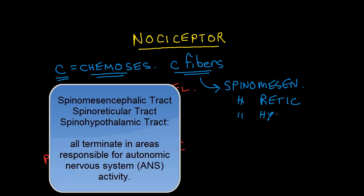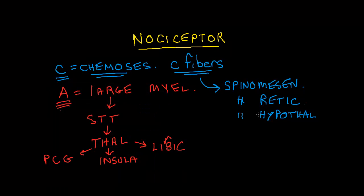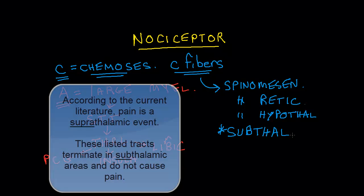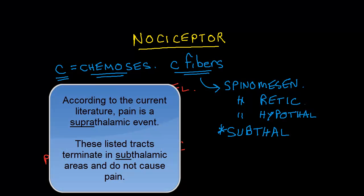The important thing to note here is that these C fibers synapse in areas that are two things that are important. One, they are subthalamic, meaning they're below the level of the brain that fires and registers pain. So any of this activity that goes subthalamically is going to create, in this case, autonomic nervous system changes, but no pain.